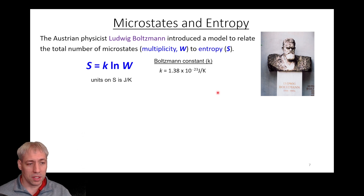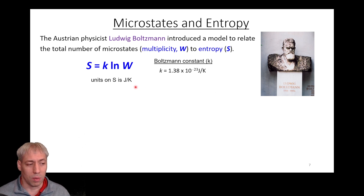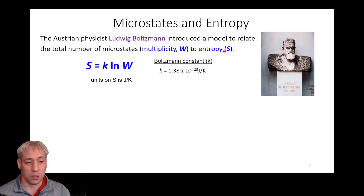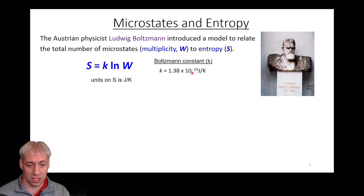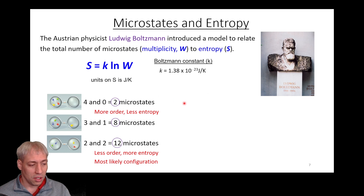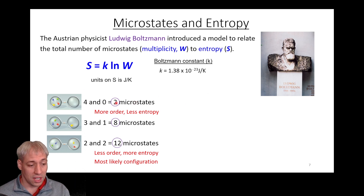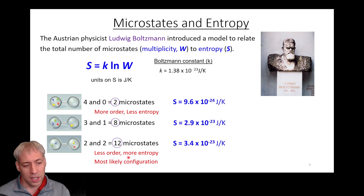One word we use to describe this in terms of the number of microstates is the multiplicity of a given state — you can think about that as a multiplicity of 12, 8, and 2. Boltzmann took this one step further: rather than just talking about it in terms of number of microstates, he generated an equation that allows us to relate this multiplicity to entropy in numerical form. Entropy is equal to k — Boltzmann's constant — times the natural log of the multiplicity of the system. The arrangement with two microstates has less entropy; the one with 12 microstates has more entropy.